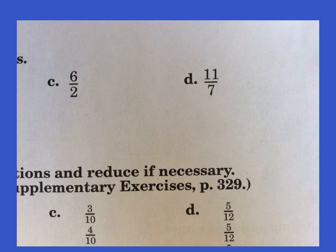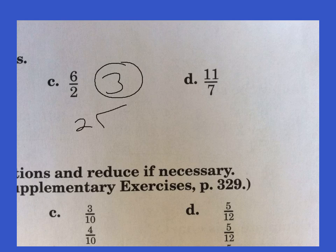C — two goes into six three times, and we can be done real quickly here. It goes in evenly. How many times does two go into six? Three times. Three times two is six. Subtract and we get zero.